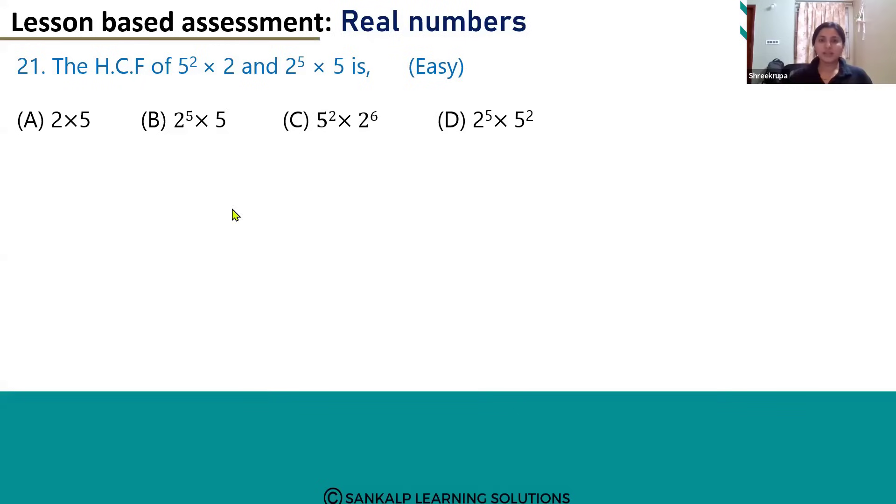Hello everyone, let's look at question number 21: The HCF of 5² × 2 and 2⁵ × 5.